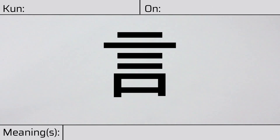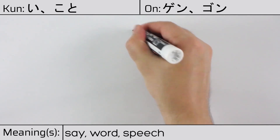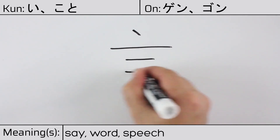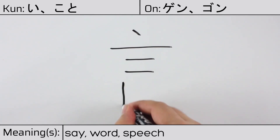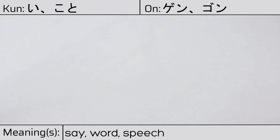Welcome to this lesson on Japanese kanji. Today, we'll be discussing this character. This kanji has kunyomi or Japanese readings of i or koto, and it has onyomi or Chinese readings of gin or gon. This character has the meanings say, word, or speech. Here is the stroke order.